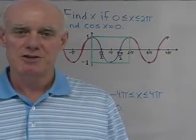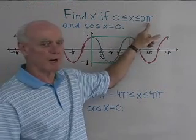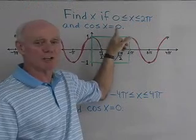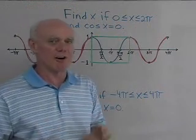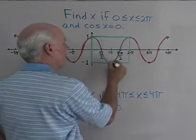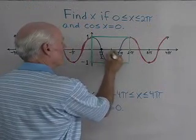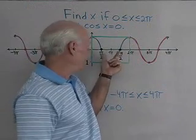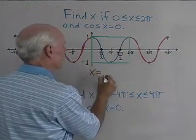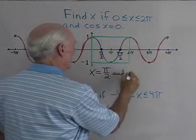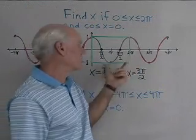Next we want to use the graph of y equals cosine x to find its zeros. We're looking for x where zero ≤ x ≤ two pi and cosine x equals zero — these are the zeros of the function. Looking at the graph between zero and two pi, the curve crosses the x-axis at two points. So the zeros are x equals pi over two and x equals three pi over two, because these are the values of x between zero and two pi for which cosine x equals zero.